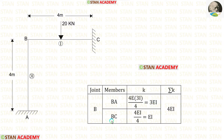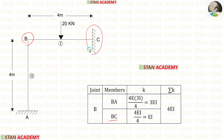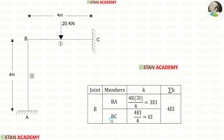Now let us find the stiffness for member BC. From joint B, we look at point C, which has been assumed as a fixed support. Since the far end is fixed, the formula is 4EI/L. The length of BC is 4 meters, giving a stiffness of EI for member BC.